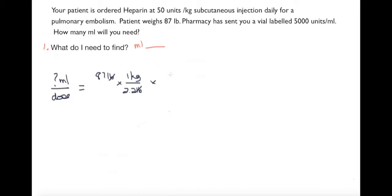First, I'm going to put in my weight conversion: 87 pounds. I know per kilogram it's 2.2 pounds. Pounds crosses off, I'm left with kilos. I also know that I have a desired dose of 50 units per kilogram, and what I have available to me is 5,000 units per 1 ml, so I'm just going to write this in.